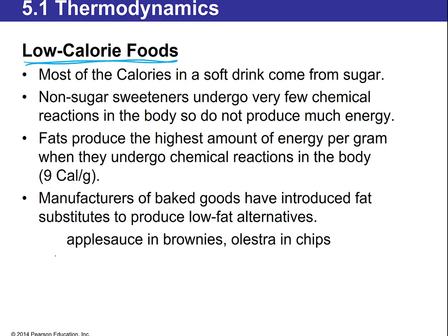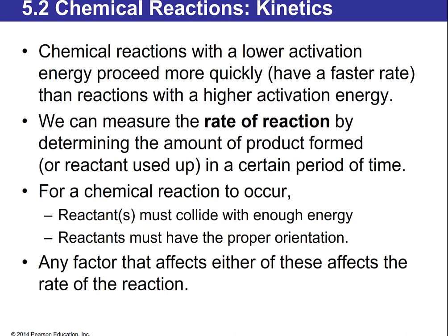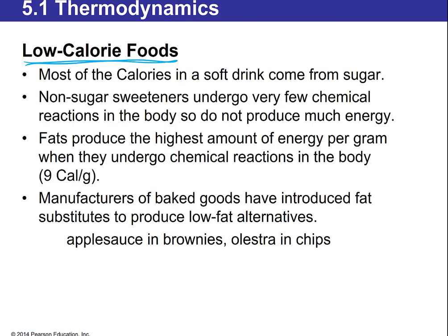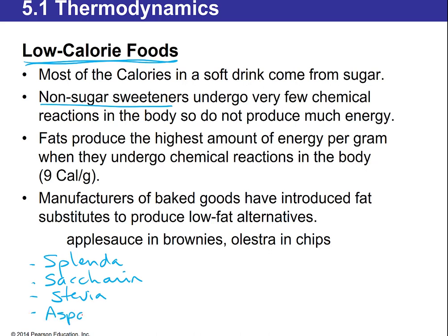Non-sugar sweeteners like stevia, saccharin, Splenda, and aspartame don't actually get broken down as an energy source. But when they hit your tongue, they stimulate sweet receptors — that's why they're used as artificial sweeteners. Stevia is the only one that actually comes from a plant.